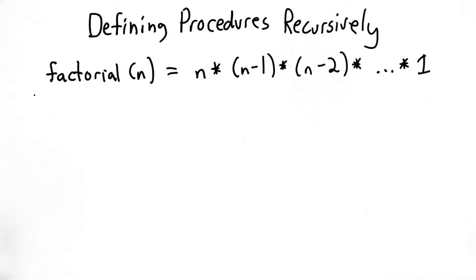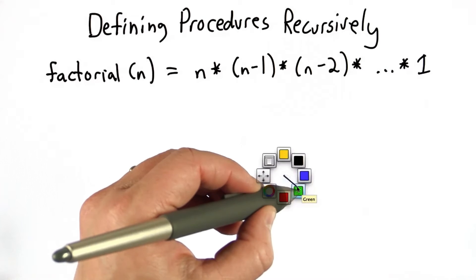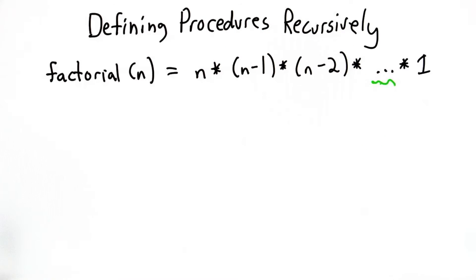So that definition is not very precise mathematically, and the problem with this as a mathematical definition is it's got this dot, dot, dot in it. And humans sort of understand that correctly, what that dot, dot, dot means, but it's not a very precise mathematical definition. If we use a recursive definition, we can define factorial in a much more precise way.